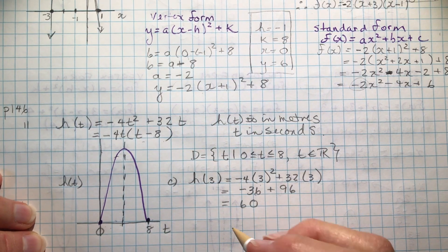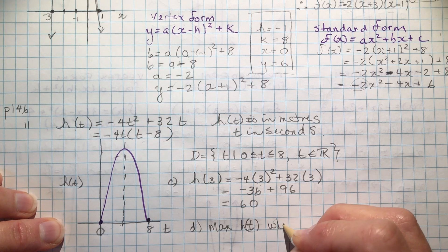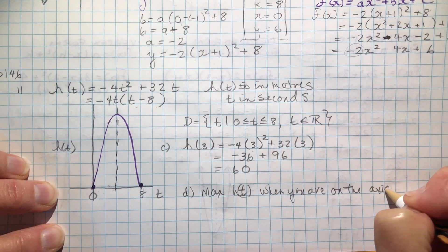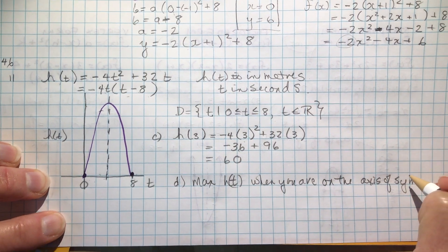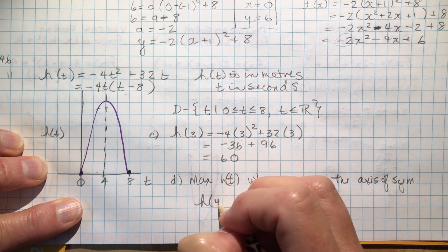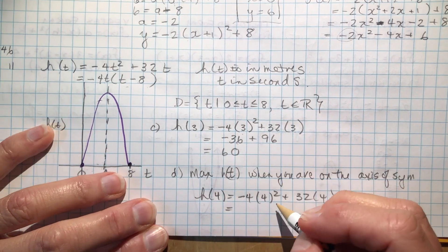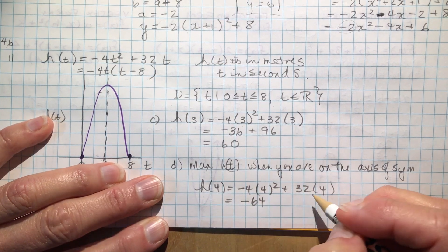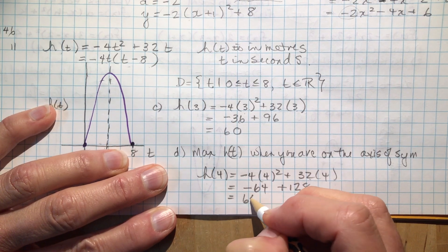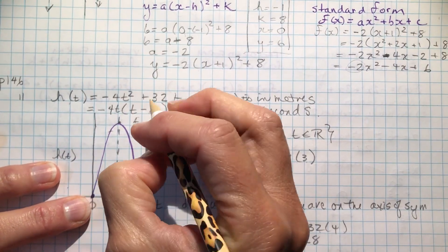The last question says, what is the maximum height of the rocket? So the maximum height occurs when you are on the axis of symmetry. Okay, so the axis of symmetry happens at 4 seconds. So I want to know, what is h(4)? So minus 4 times 4 squared, plus 32 times 4 this time. And 4 squared is 16 times minus 4 is negative 64. And 32 times 4, if you're really good, you should be able to do this in your head, it's not that hard. And this of course is double that one. So if I subtract, I get 64. So that means that this highest point right here on my graph, this is going to be 4 and 64.